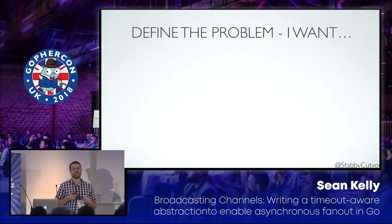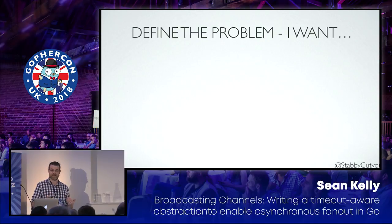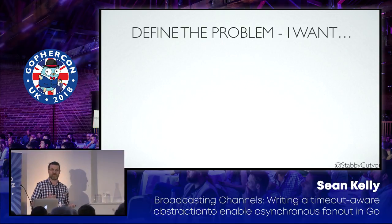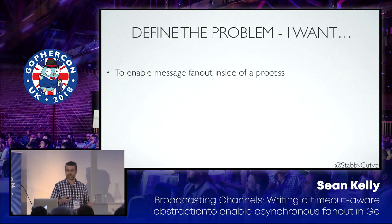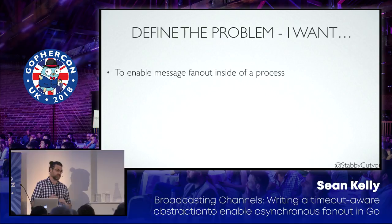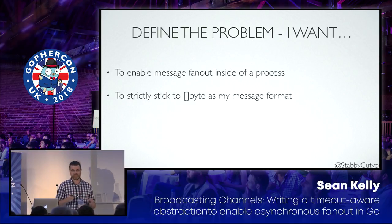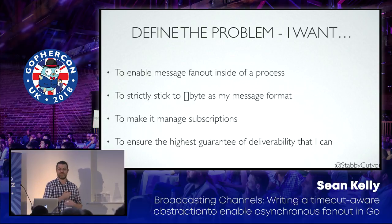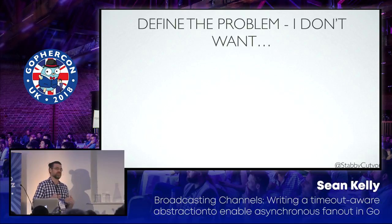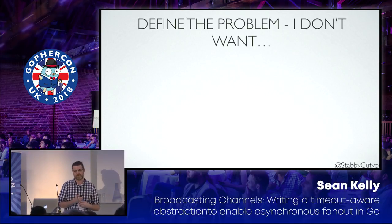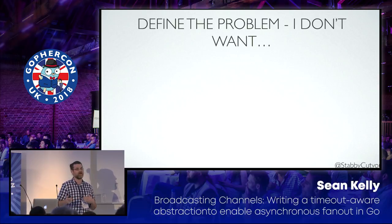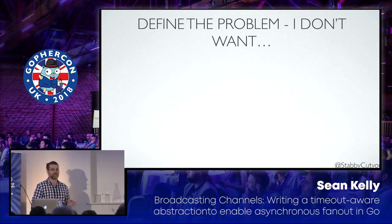One thing that's often helpful, regardless of how you're writing code, is to define the problem once you start writing. I had roughly four things I wanted to do: enable fan-out inside a process — specifically not dealing with IPC — stick to a simple slice of bytes as my message format, make it easy to manage subscriptions, and ensure the highest guarantee of deliverability. I wanted to make sure there was no issue in my library that prevented somebody from receiving a message.